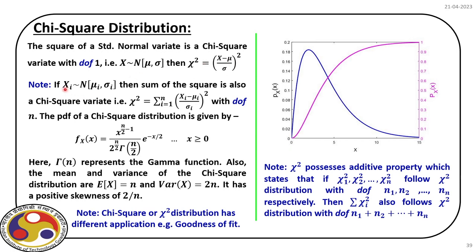If we have a set of random variables xᵢ each following normal distributions with individual parameters μᵢ and σᵢ, and we sum the squares for i ranging from 1 to n, the result is also a chi-square variate defined as χ² = Σᵢ₌₁ⁿ ((xᵢ - μᵢ)/σᵢ)². In this case, because we have n normal variates whose sum of squares is taken as the chi-square variate, the degrees of freedom is n.